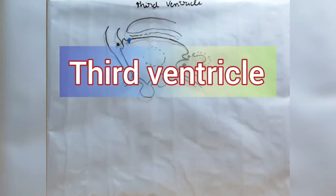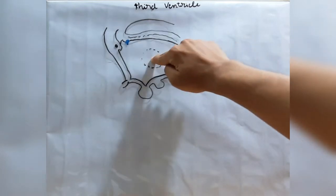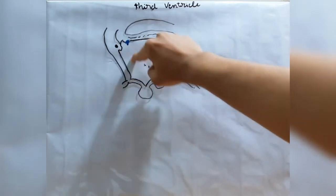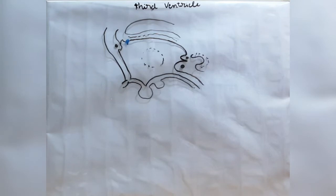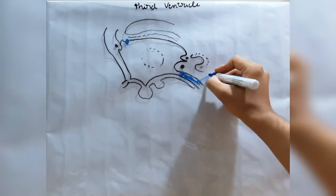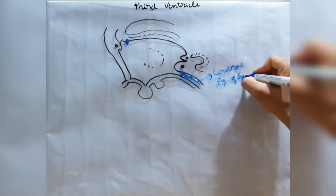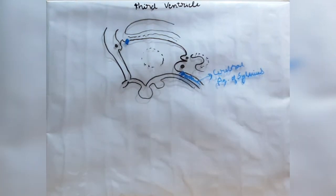The third ventricle is a slit-like cavity formed in the diencephalon between the two thalami, situated in the midline between the left and right lateral ventricles and filled with cerebrospinal fluid. It is connected to the lateral ventricles via the Y-shaped foramen of Monroe. This tube-like structure here is called the cerebral aqueduct of Sylvius, which connects the third ventricle to the fourth ventricle.